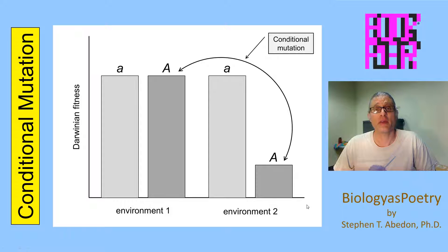Alleles can vary in their fitness impact from environment to environment depending on environmental conditions. One example of such a mutation is a conditional mutation.